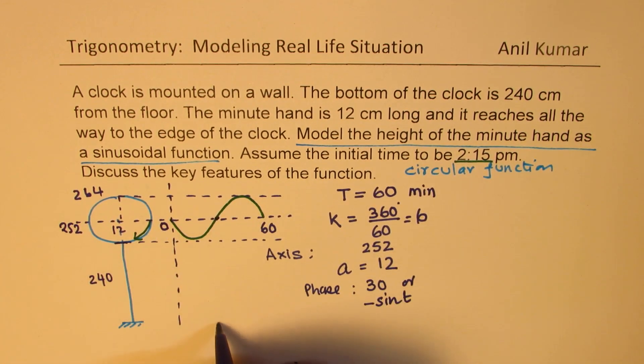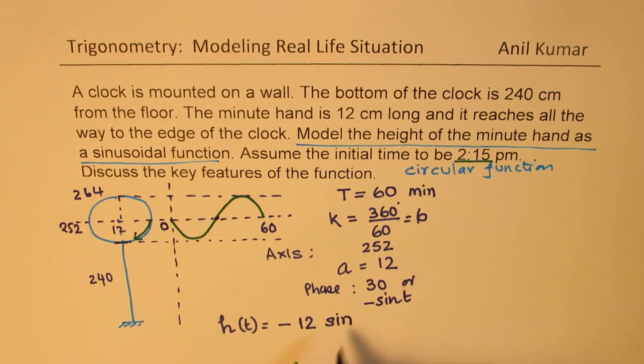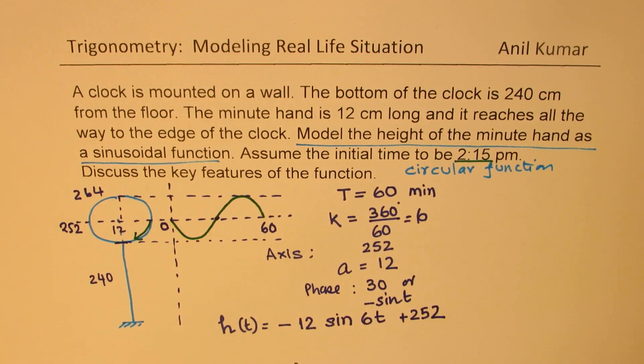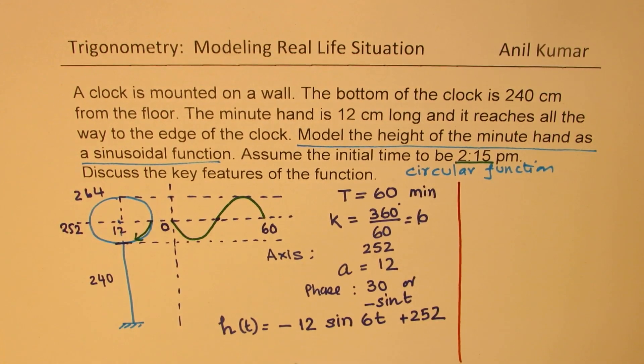So, at any instance of time, the height h(t) will be given as negative, since it goes in downward direction first. The amplitude is 12. We are using sine function. K value is 6. So, h(t) = -12 sin(6t) + 252. That becomes the sinusoidal function, which represents complete information about the height.